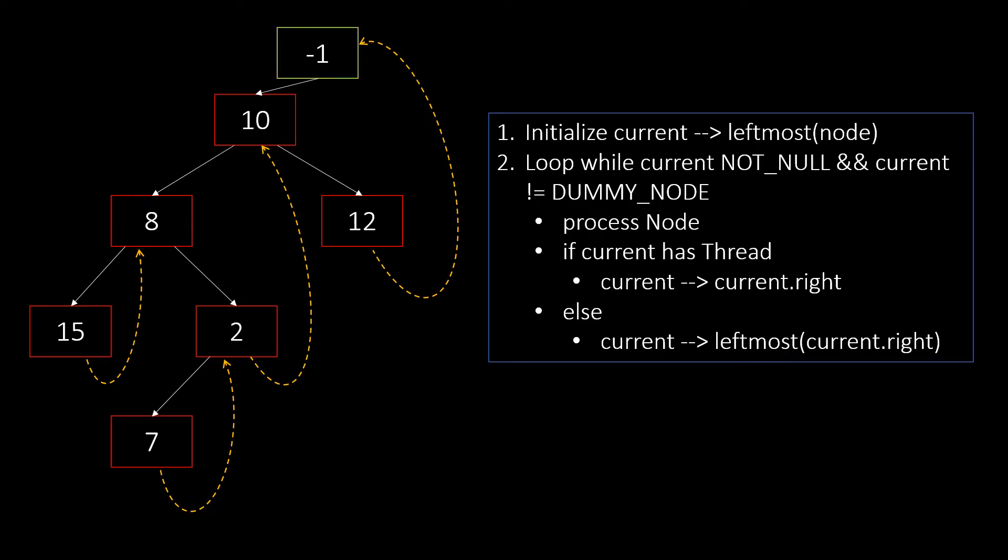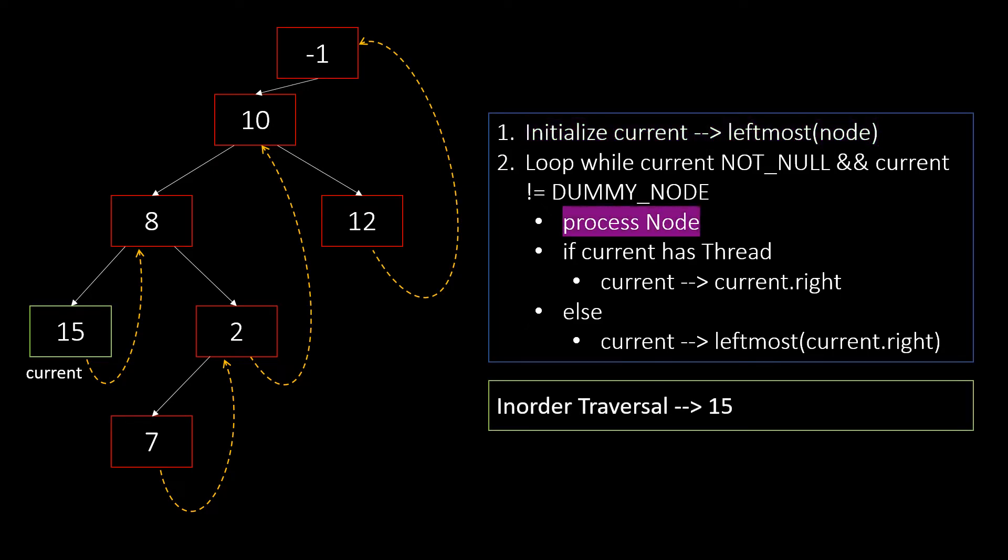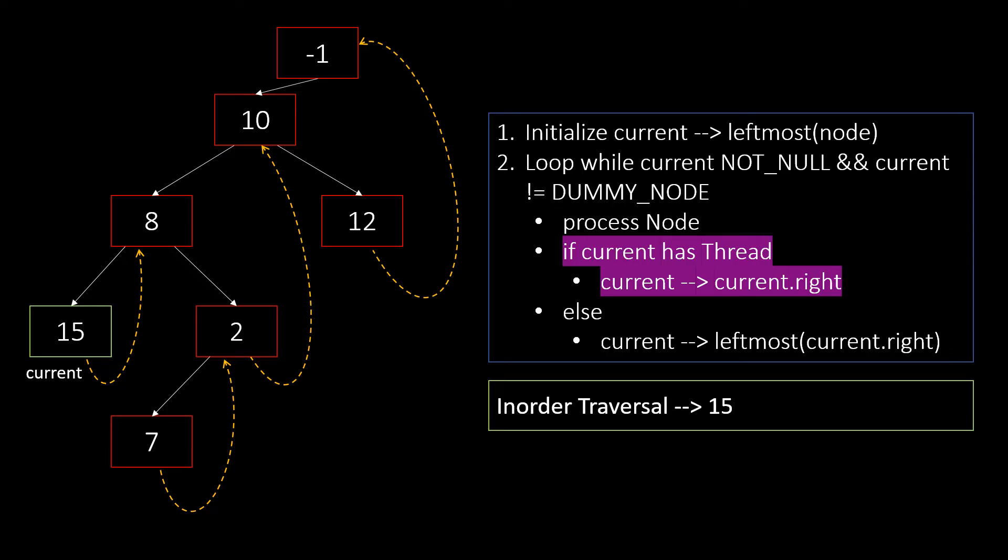Let's try the dry run of it on this tree. We will start with the root node or the dummy node and initialize current as leftmost child of the dummy node. So, the current becomes 15. Now, we start the loop. We will process the node and update the current to its right as it has a thread. So, current becomes node 8.